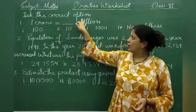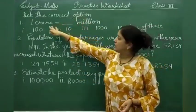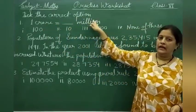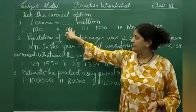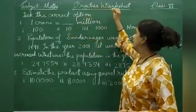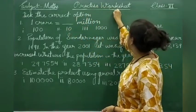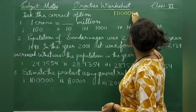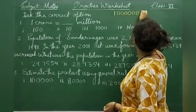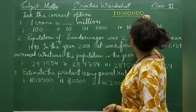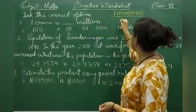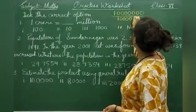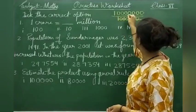Question number 1: Check the correct option. Question number 1 is: 1 crore is equal to how many millions? To find how many millions, 1 crore has 7 zeros and 1 million has 6 zeros.